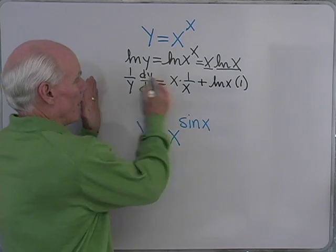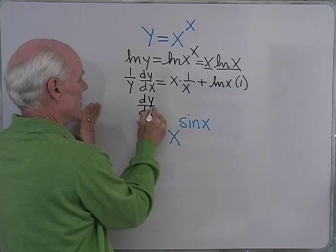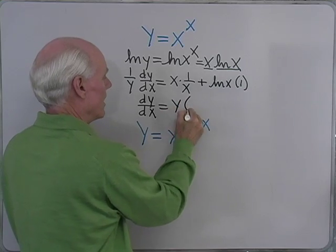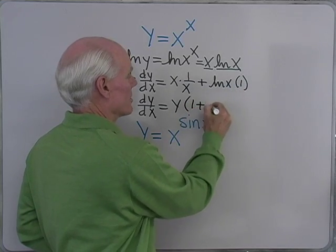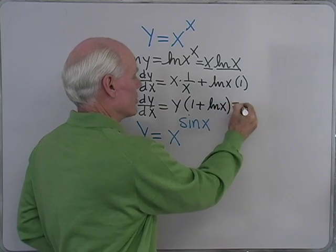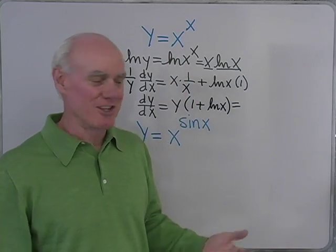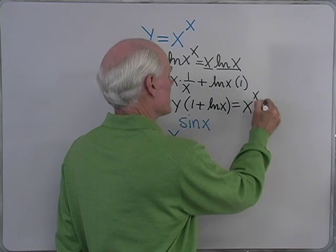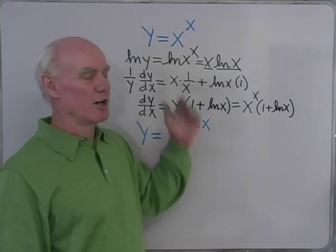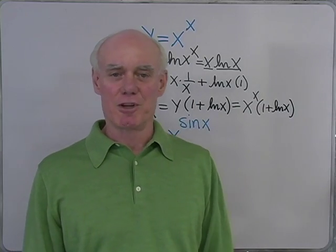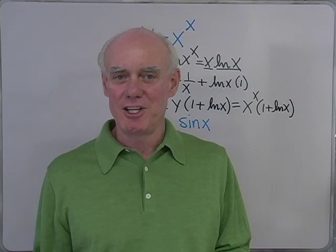Plus the second, log x, times the derivative of the first, which is 1. So let's multiply both sides by y to get rid of it. dy/dx is equal to y times — x times 1 over x is going to be 1, plus log x times 1 is log x. And just to finish this off and write everything in terms of x, y was equal to x to the x. So I have x to the x times (1 plus log x). A nice simple way to find some pretty complicated derivatives, just using our properties of logarithms.